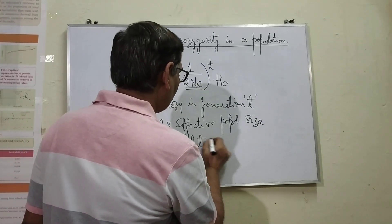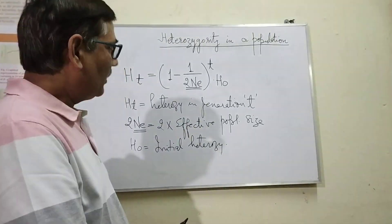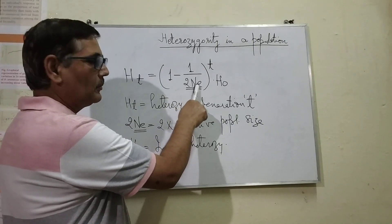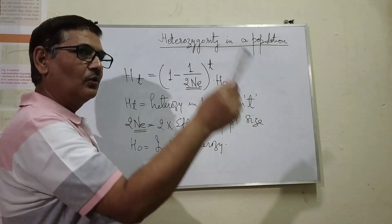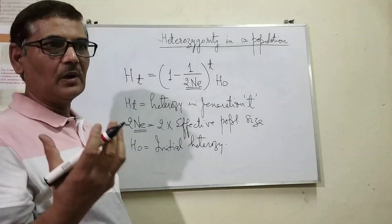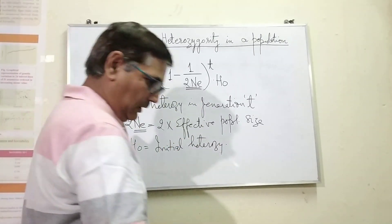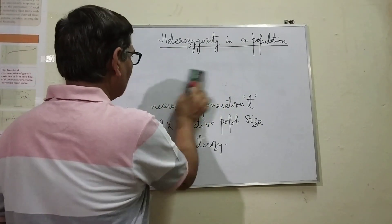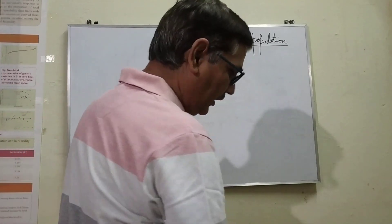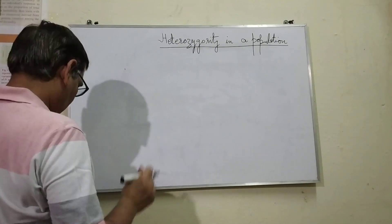What was the heterozygosity in the population at the initial stage? By using this formula, we can see that if effective population size is very large, then what could be the situation. Just by considering the number of individuals who are contributing to the next generation, we can know the fate of heterozygotes.